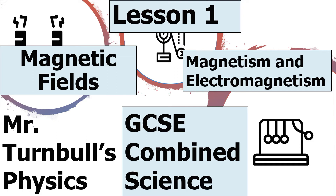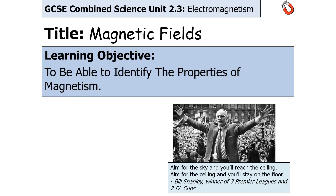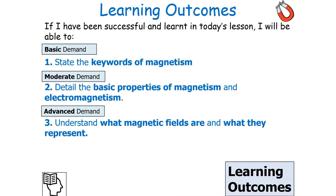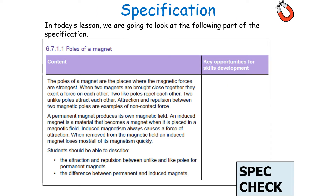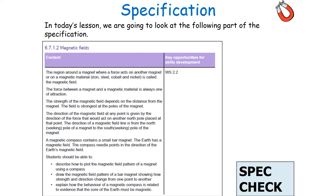Hello and welcome to today's lesson on magnetic fields, which forms part of the magnetism and electromagnetism topic in GCSE Combined Science Physics. In today's lesson we're going to look at identifying the properties of magnetism. If we're successful, you should be able to state the key words of magnetism, detail the basic properties of magnetism, and understand what magnetic fields are and what they represent. We're going to look at the following part of the specification: poles of a magnet and magnetic fields.